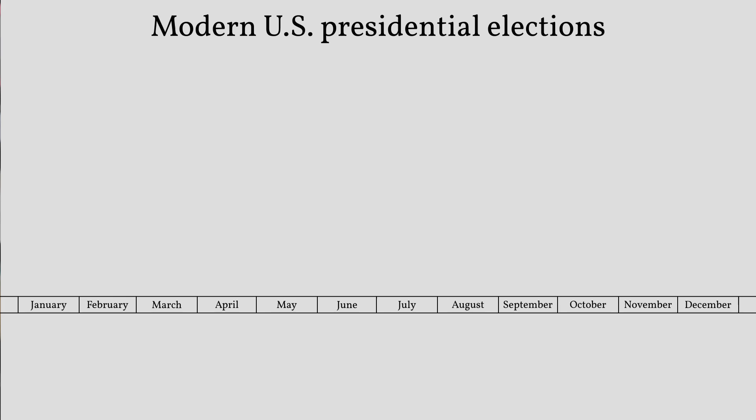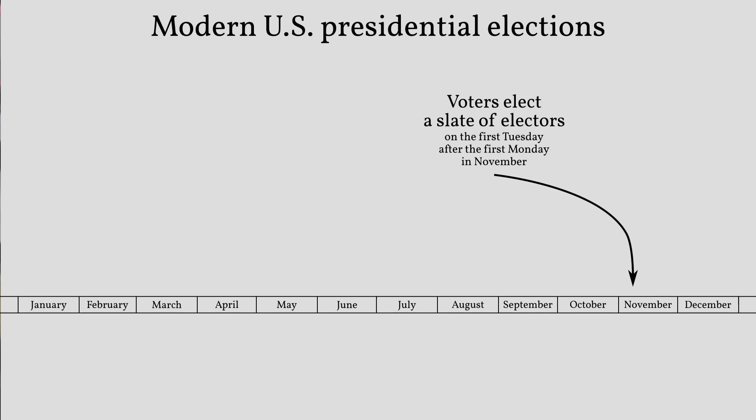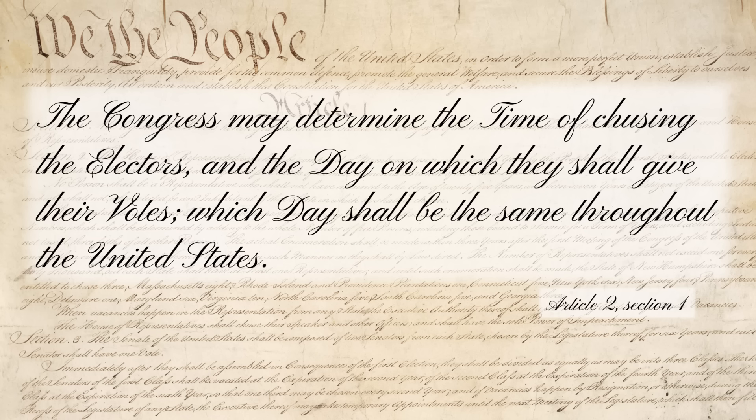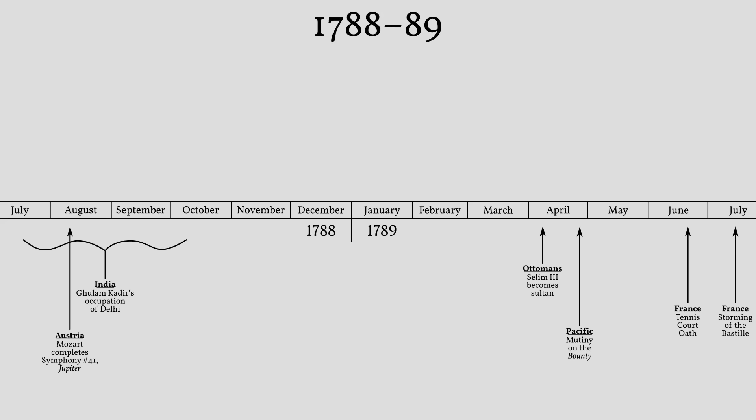When Americans go to the polls in early November of an election year, they're voting for electors. Then the electors meet — nowadays in the middle of December — and cast their votes for president, and that's the actual election of the president. So what we call Election Day is actually the election of the electors. The Constitution gives Congress the power to decide when each of those elections happens. In this first election in 1789, the election of electors happened on January 7th, and then the electors would meet and choose the president on February 4th, 1789.